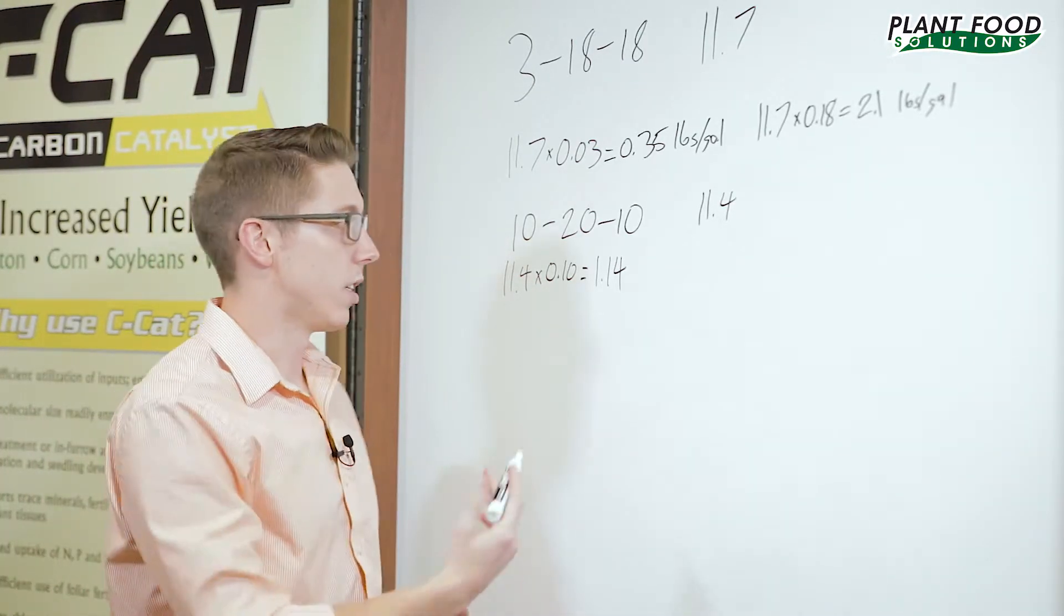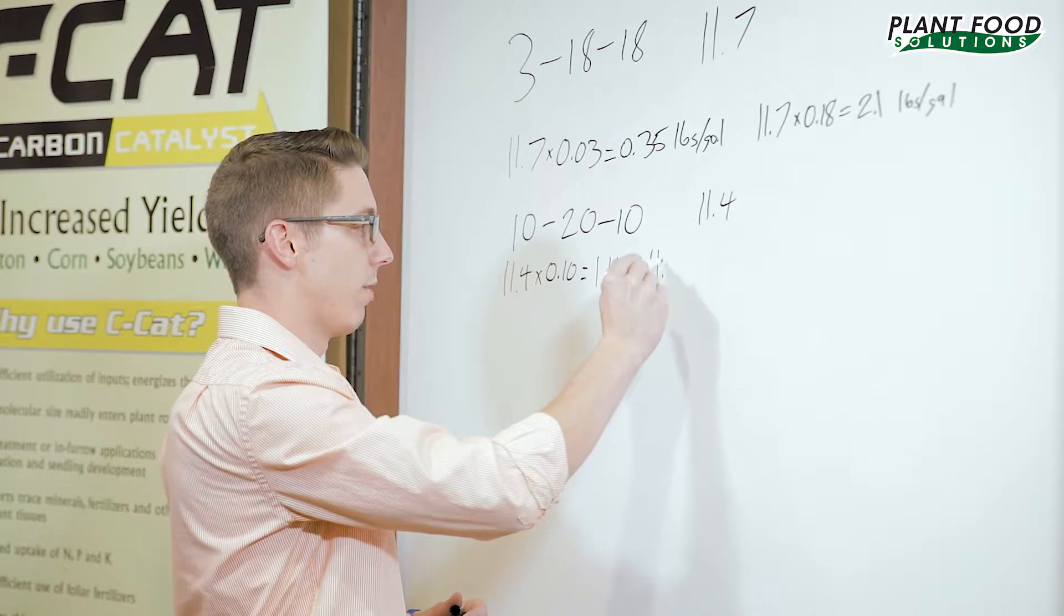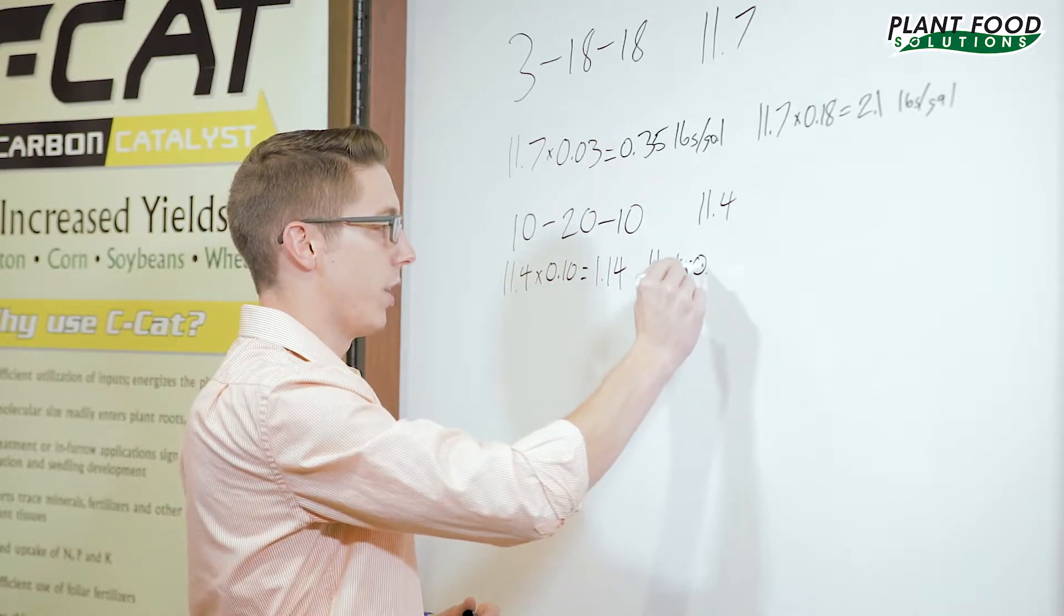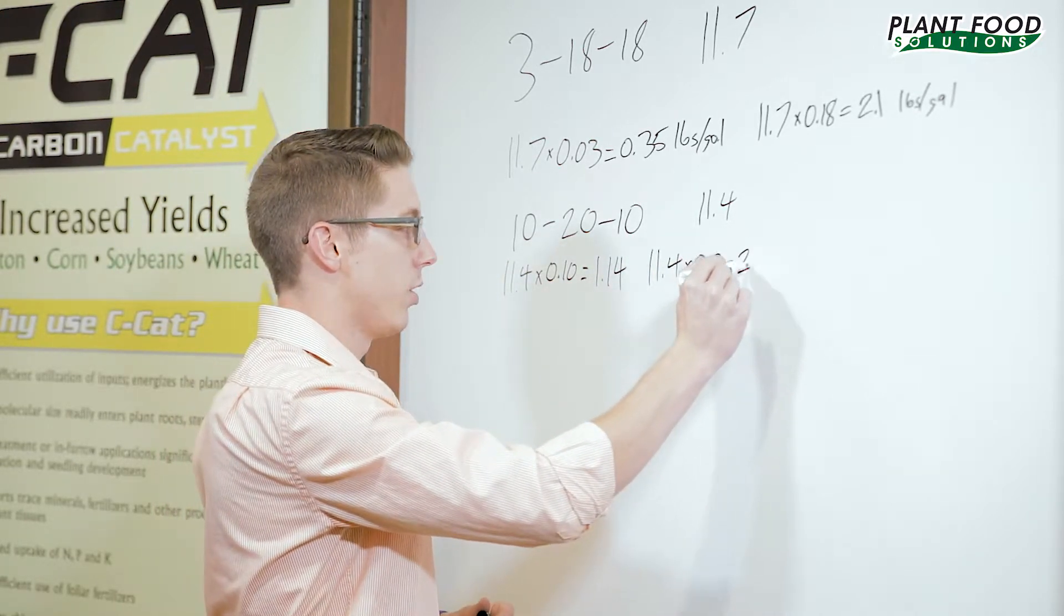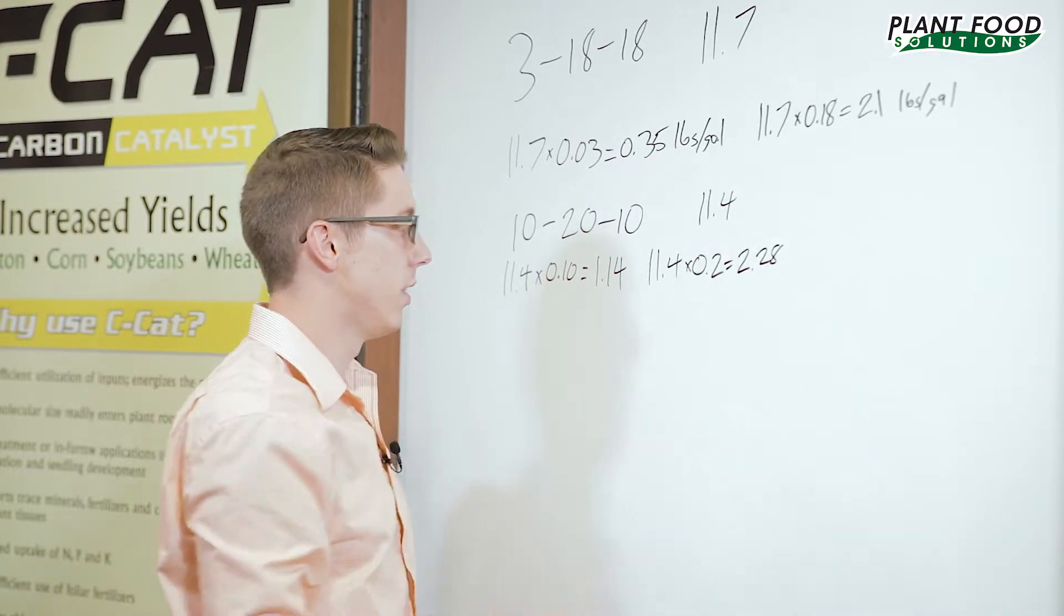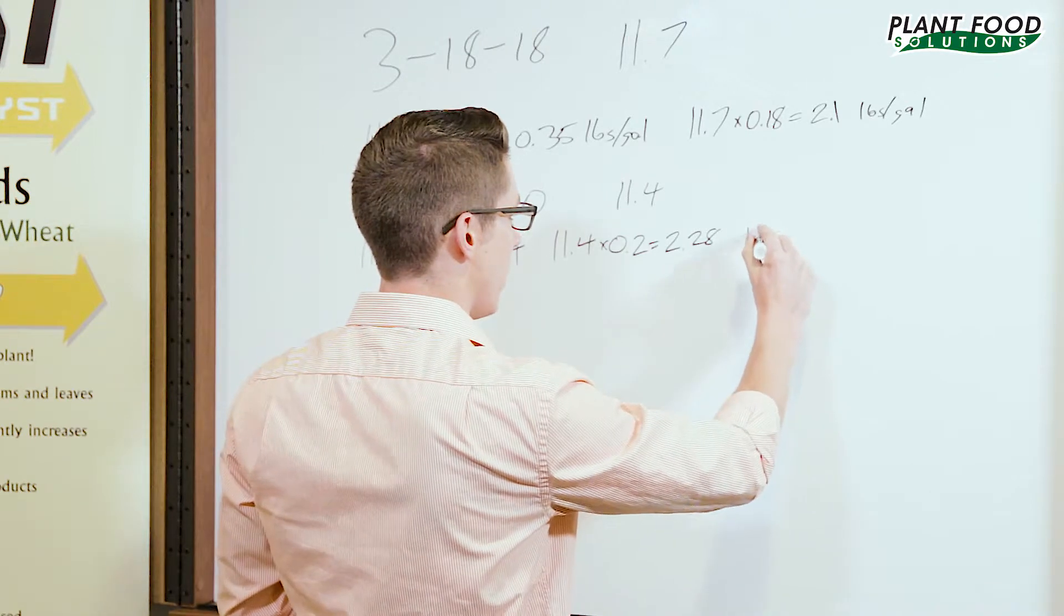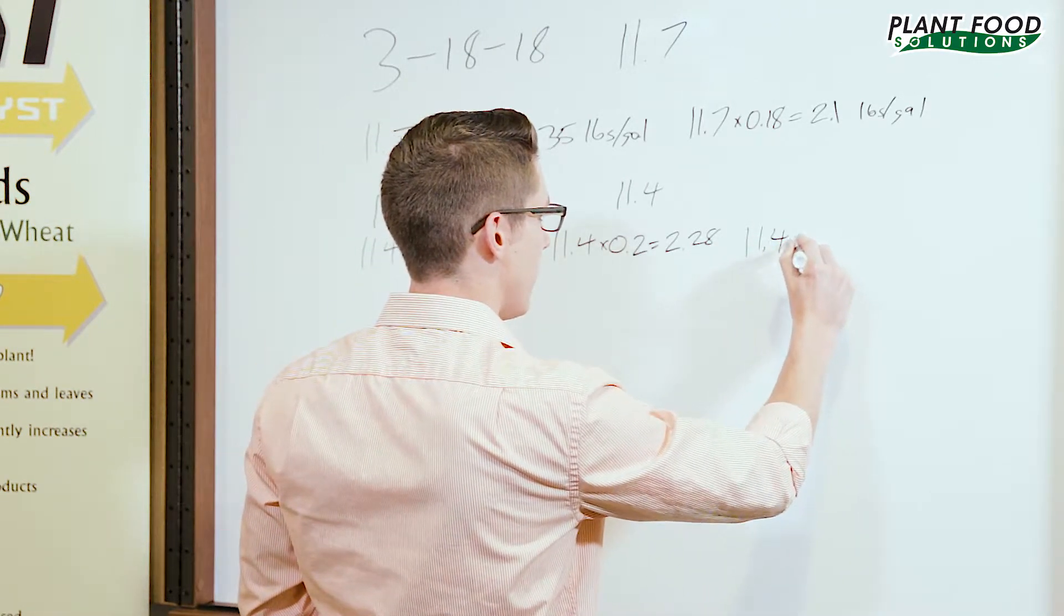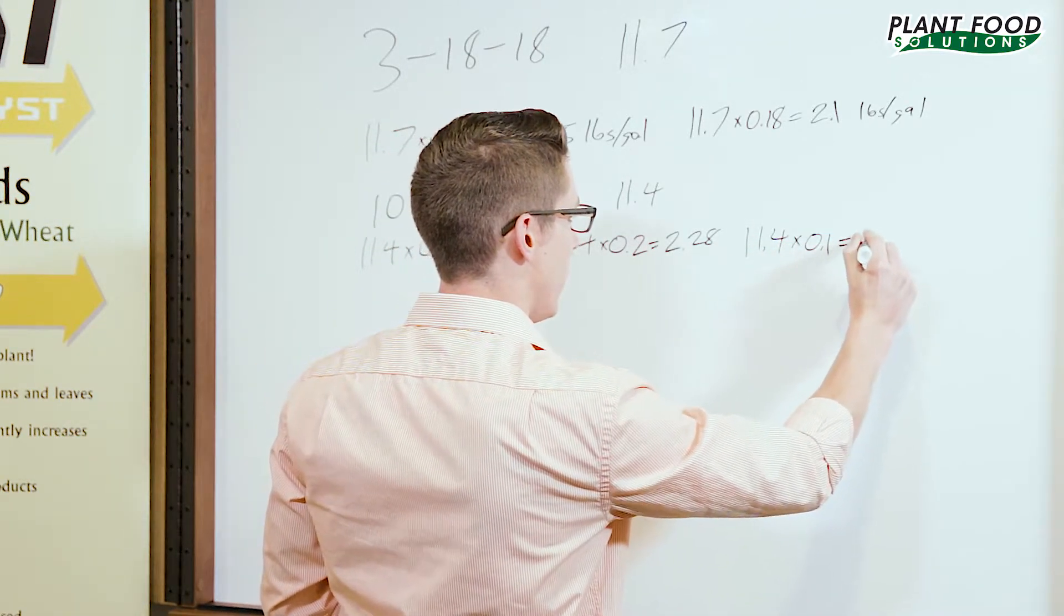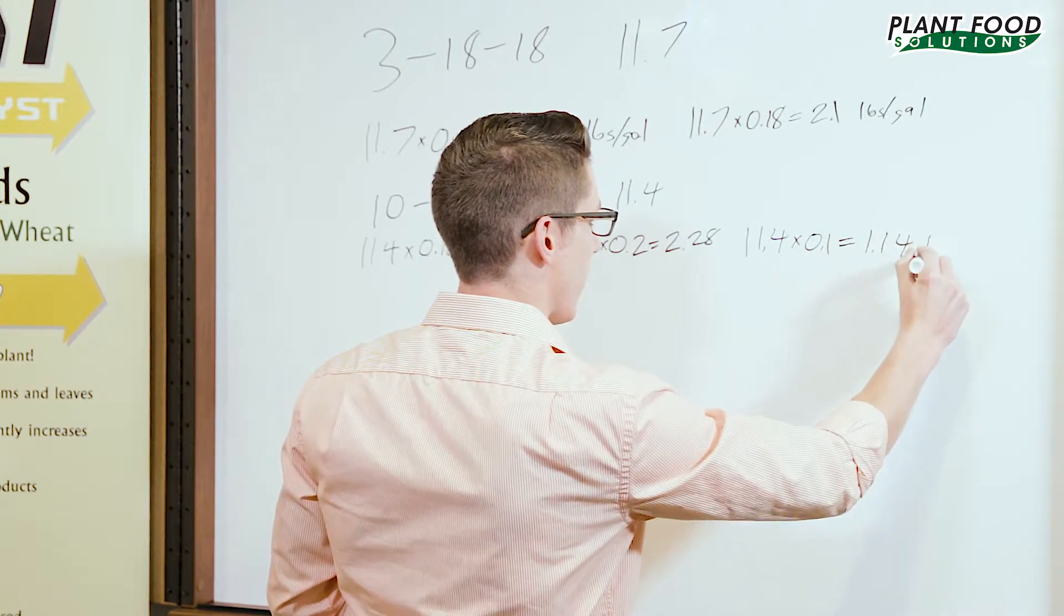Your phosphorus is going to be 20%. So 11.4 times 0.2 comes out to be 2.28. Your K is going to be 10% just like your nitrogen is. So 11.4 times 0.1, 1.14 pounds to the gallon.